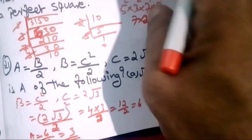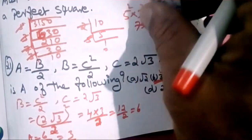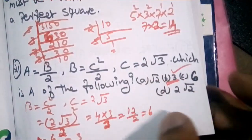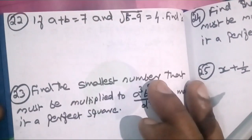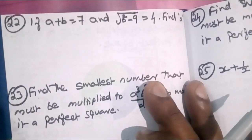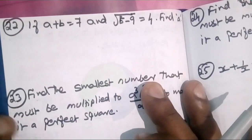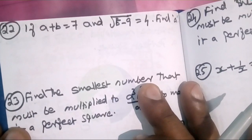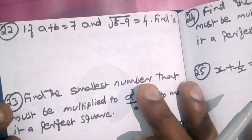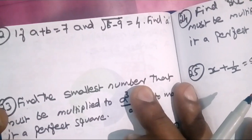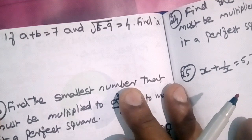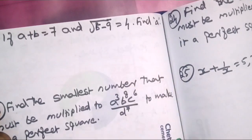It's very simple. Question number 22: if a plus b is equal to 7 and root of b squared minus 9 is equal to 4, find a.